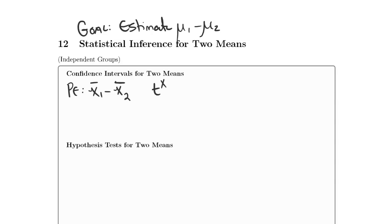T star is going to be as before. You're either going to calculate it using the table or with a TI-83 calculator.